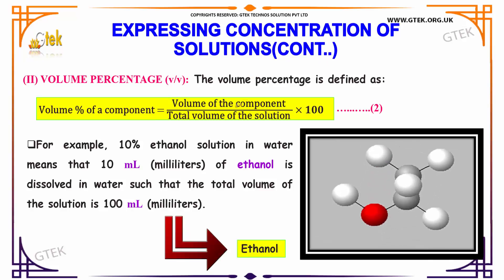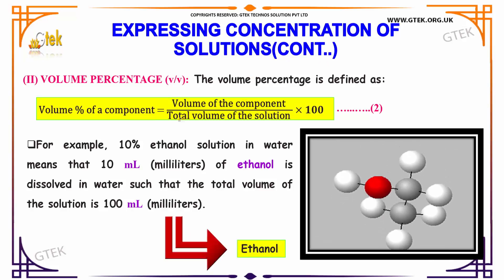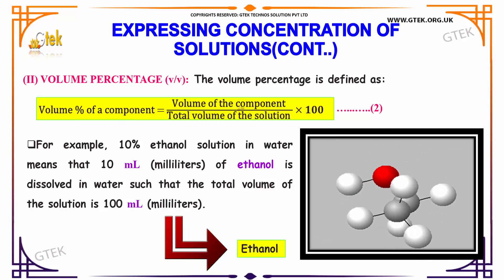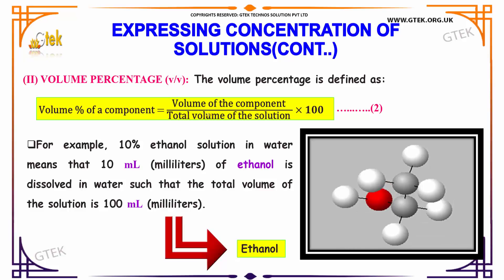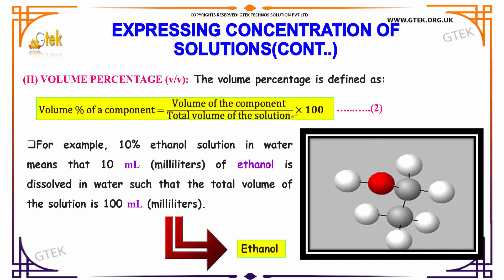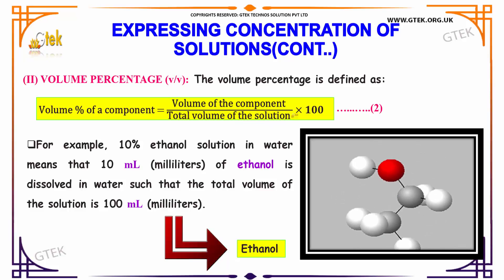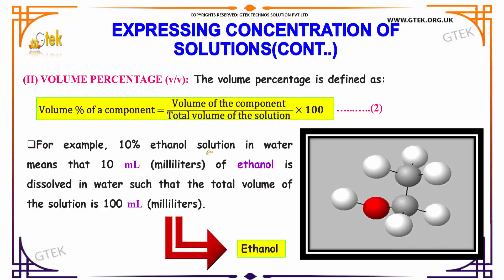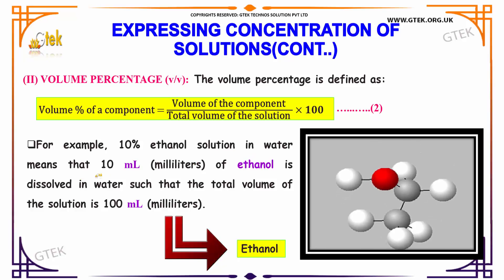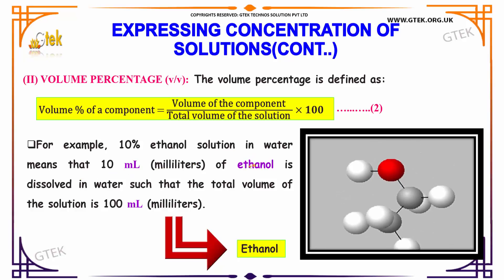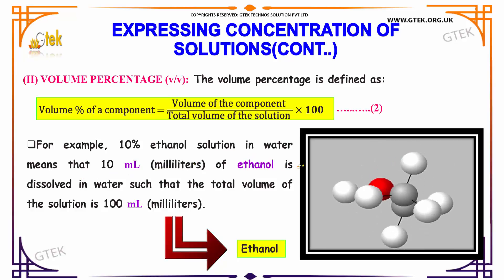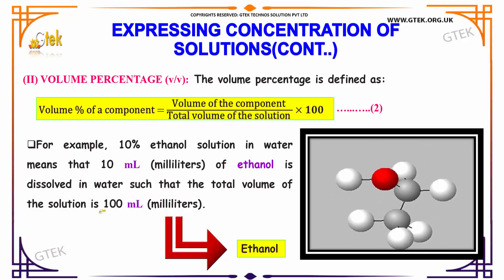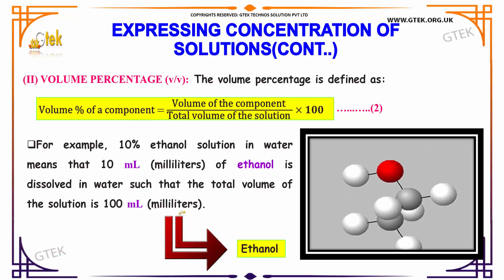Here is the volume percentage. It is defined as the volume of the component divided by the total volume of the solution, multiplied by 100. For example, a 10% ethanol solution in water means that 10 ml of ethanol is dissolved in water such that the total volume of the solution is 100 milliliters.